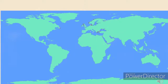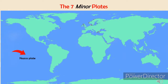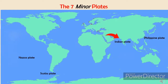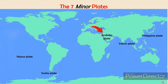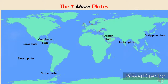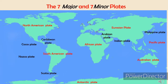After identifying the seven major plates, we will now identify the seven minor plates on the map. The seven minor plates are: Nazca plate, Philippine plate, Scotia plate, Indian plate, Arabian plate, Cocos plate, and Caribbean plate. These are the seven major and seven minor plates and their locations on the map.